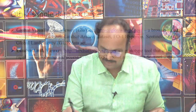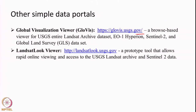One is the Globus portal, globus.usgs.gov - a browse-based viewer where we can visualize software, especially Landsat Hyperion which is hyperspectral data, Sentinel-2, and global Landsat. It is basically a visualization platform primarily. We can also look at Landsat data using Landsat Look (landsatlook.usgs.gov), which allows rapid online viewing and access to the Landsat archive and Sentinel-2 data.